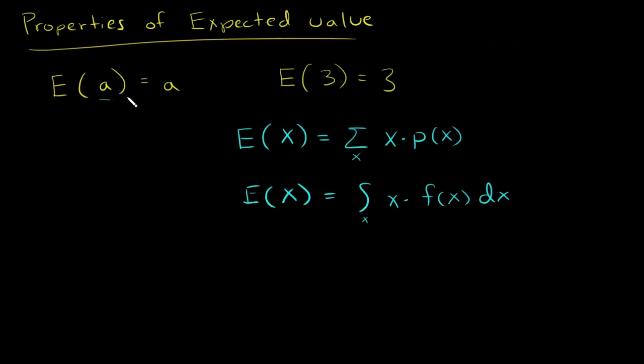So now if I have the expected value of a, as opposed to having x, I'm not trying to find the expected value of x, but now I'm trying to find the expected value of a. In the discrete world, this would be the sum over all values of x times a times the probability mass function of x.